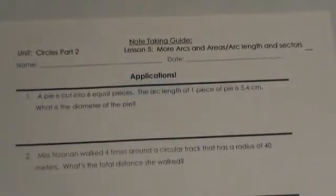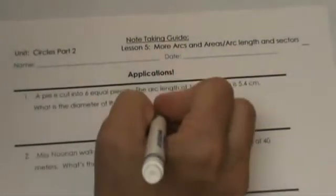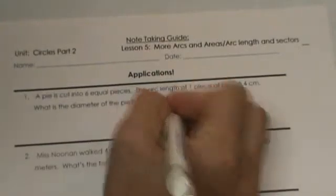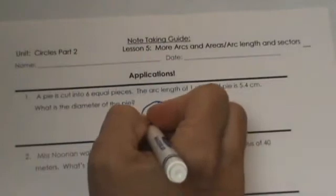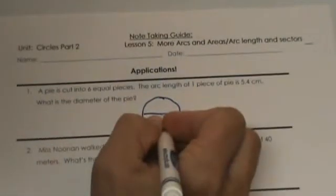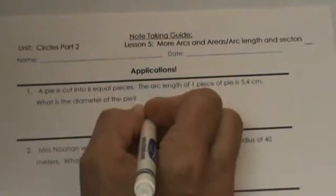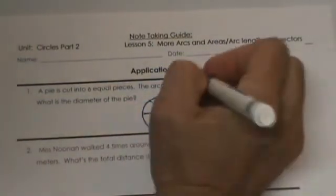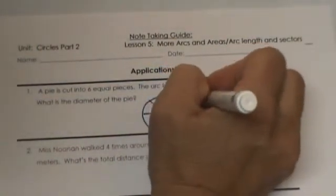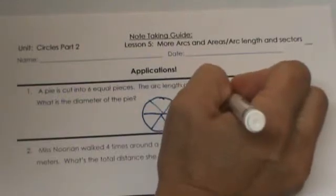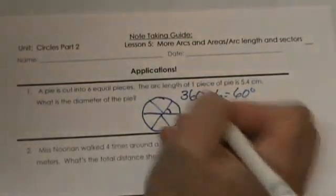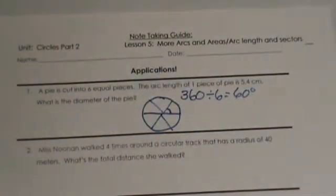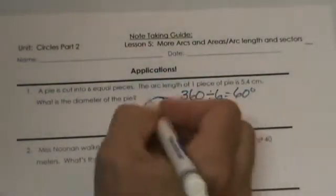Our strategy is to draw a picture. Let's start by drawing a picture of the pie. We are assuming it is a circular pie with 6 equal pieces. Cut it in half and then divide that out into 6 equal pieces. If we have 360 degrees divided into 6 equal pieces, our central angle is 60 degrees. That gives you an idea of what we are working with.